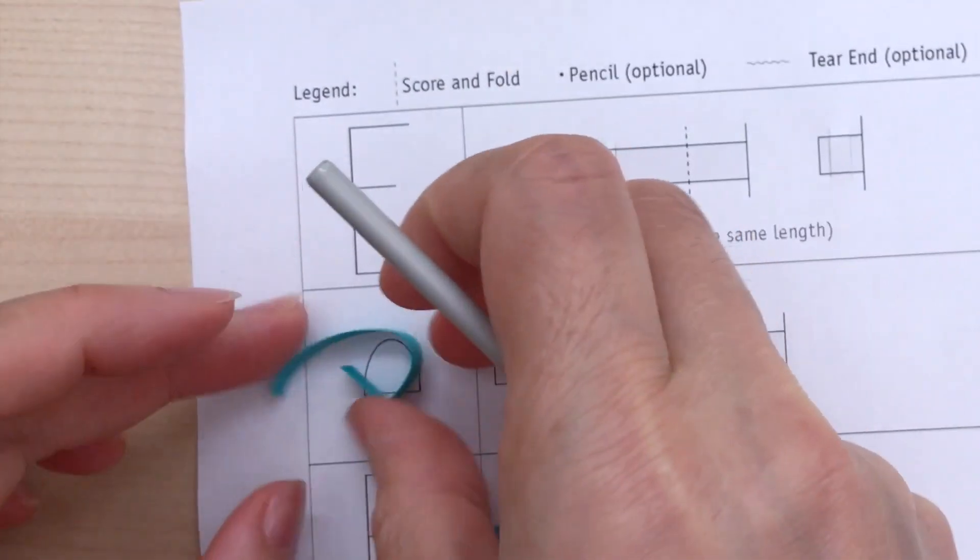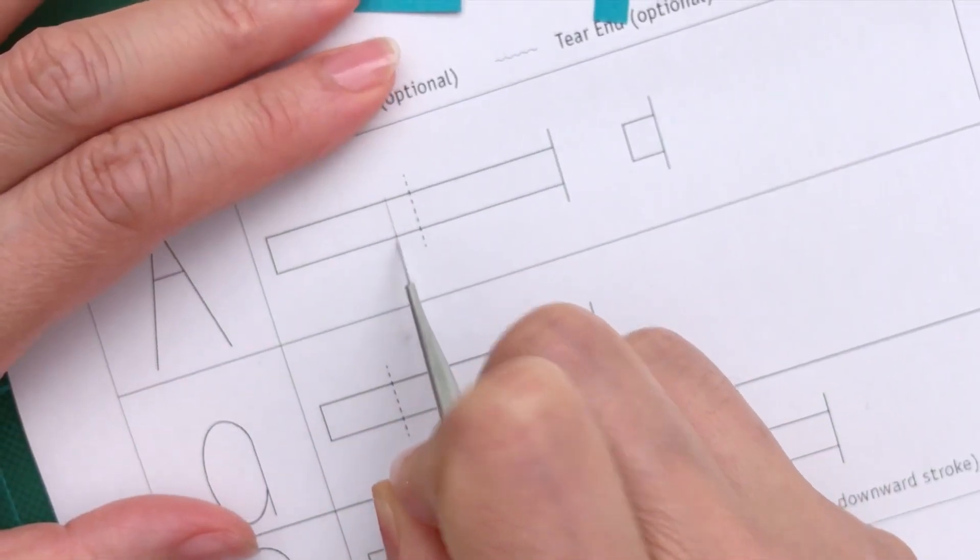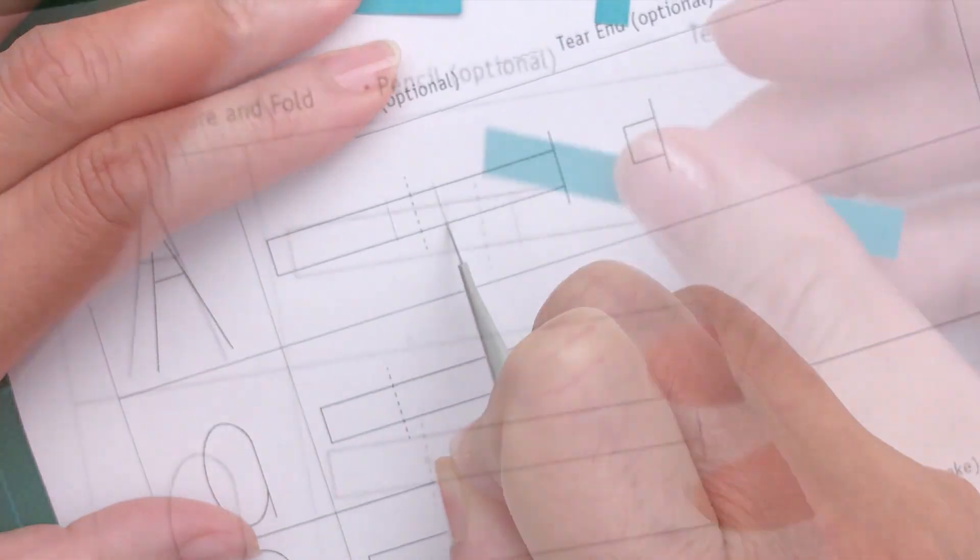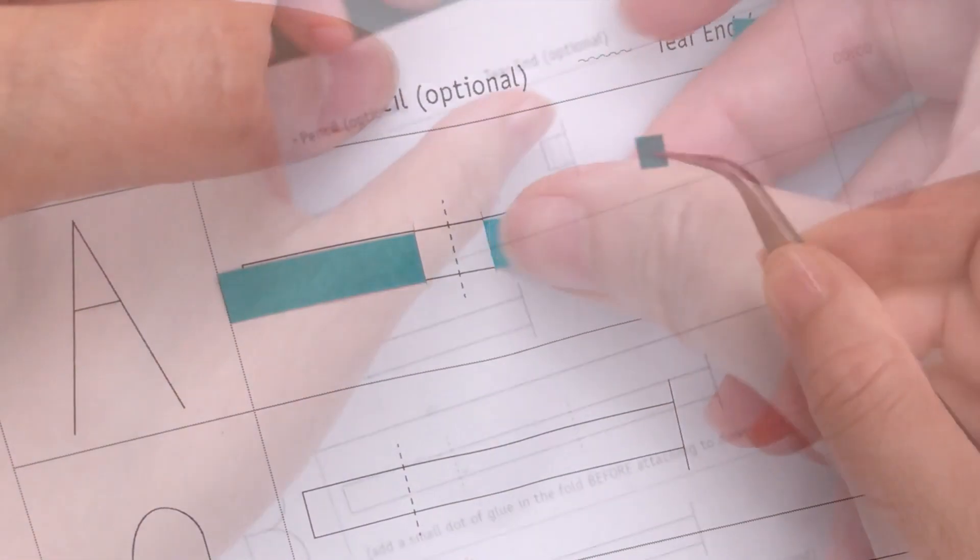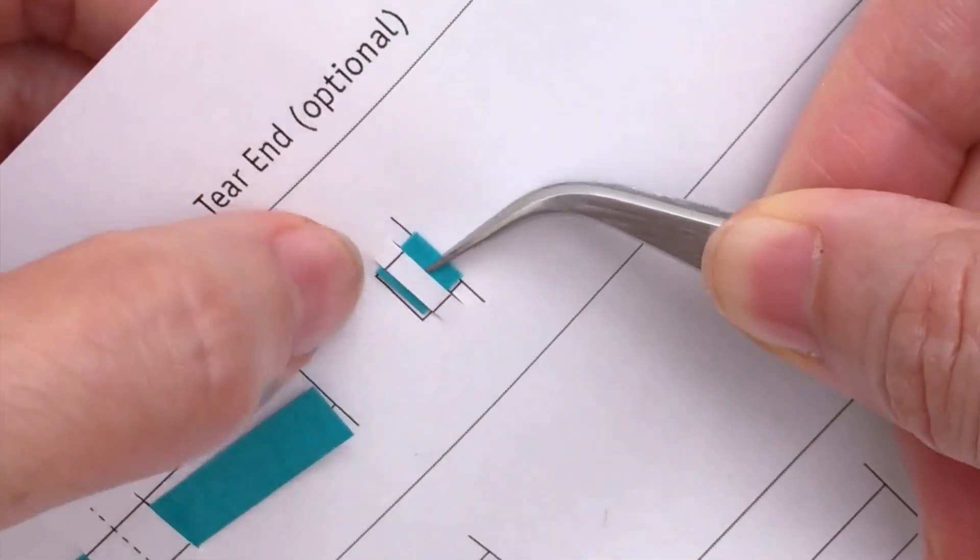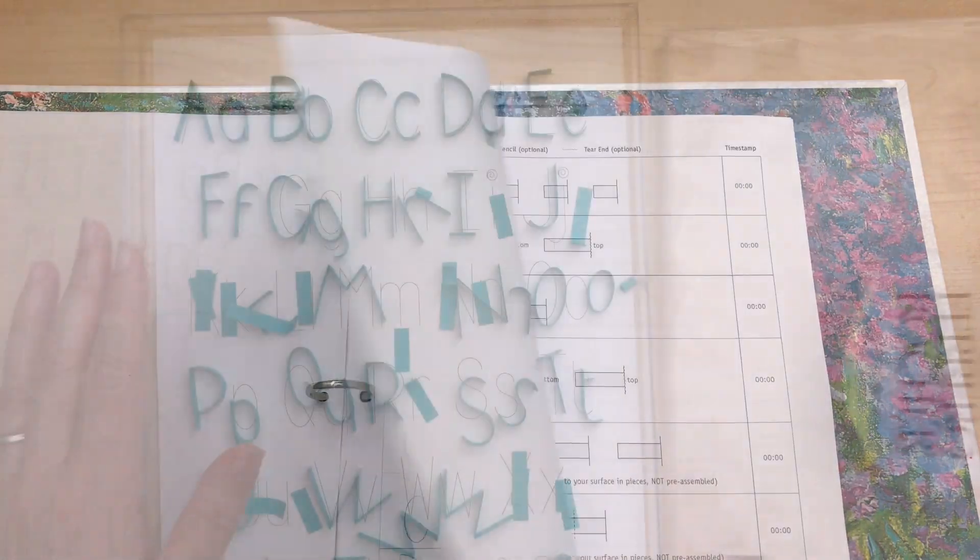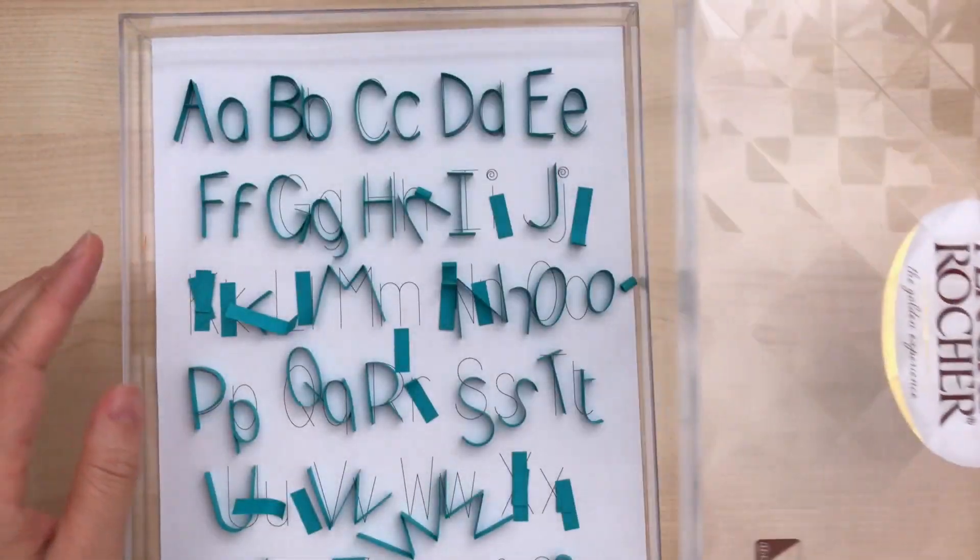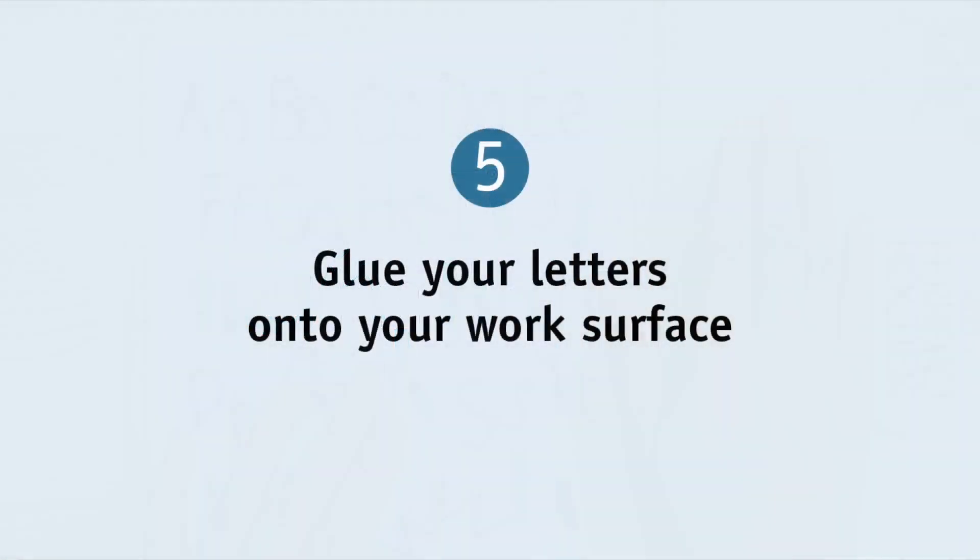Next follow my step-by-step tutorials to shape all the letters. Skip to the letter you want by clicking the video time in the right hand column. To make sure I don't lose any strips I cut slits of my pattern and weave the paper through the slits. Storing my prepared strips like this makes me efficient and I don't lose track of them. It also lets you pause at any stage and store it neatly away until you can work again. Store the shaped letters in a box to keep them safe until you're ready to glue them to your work surface.